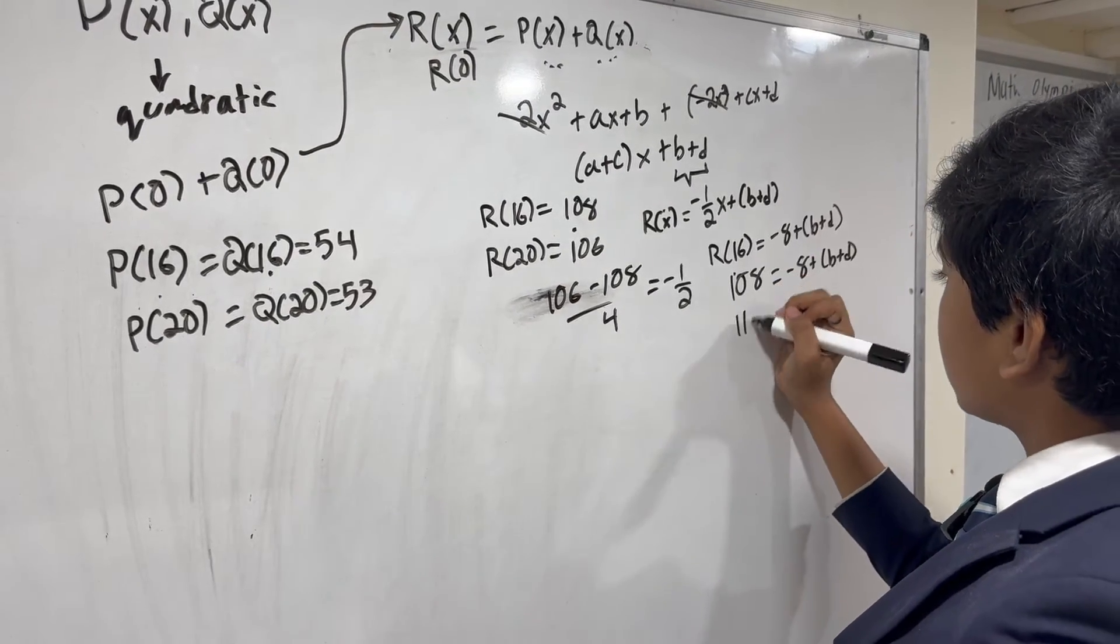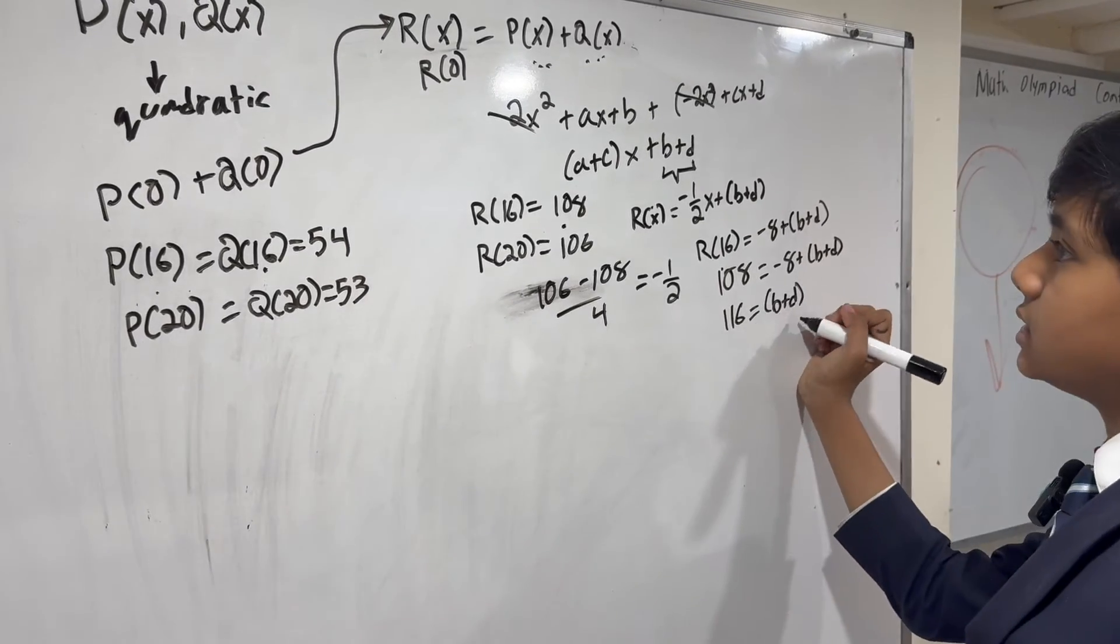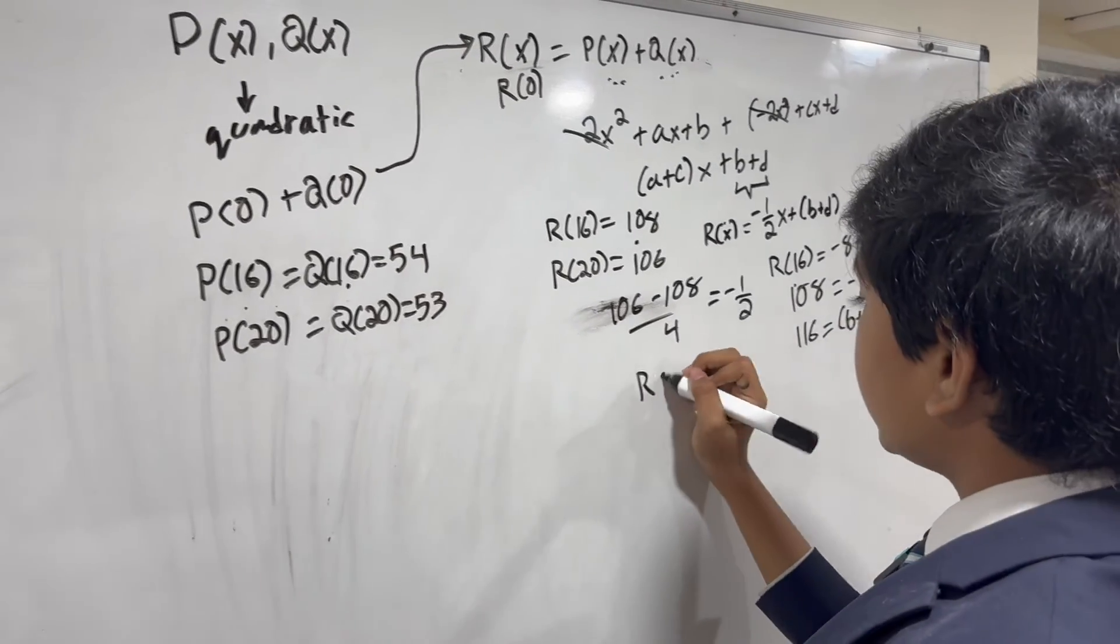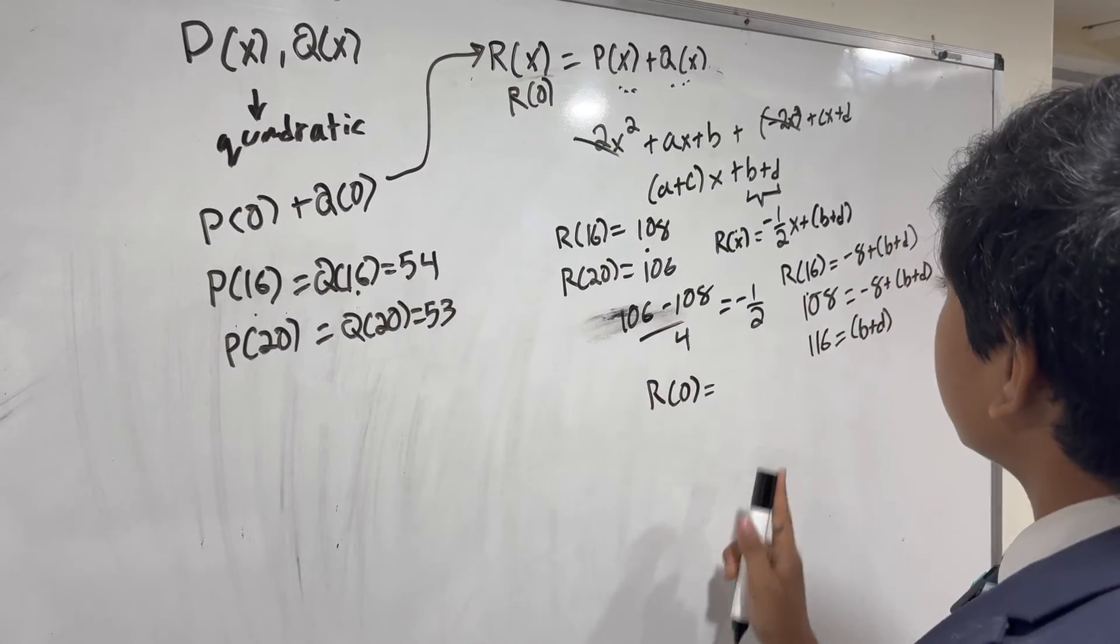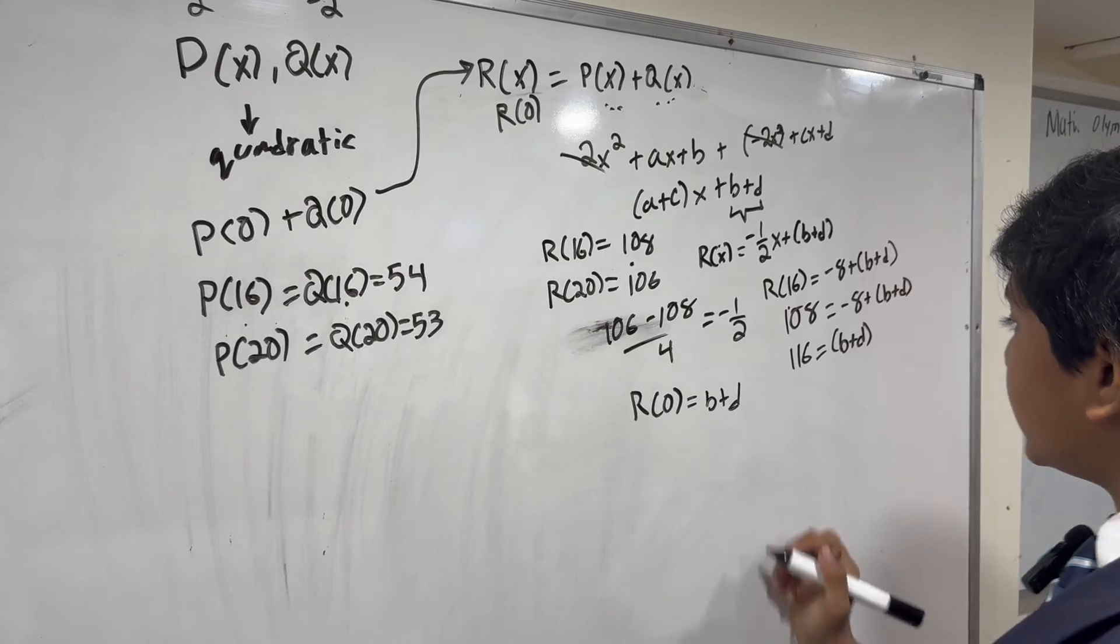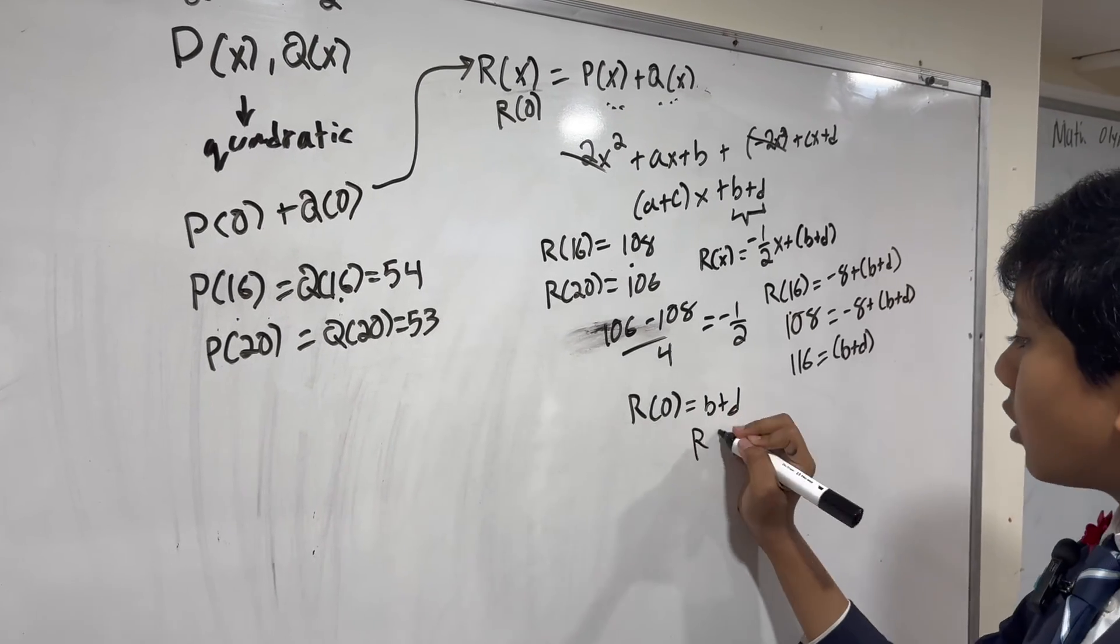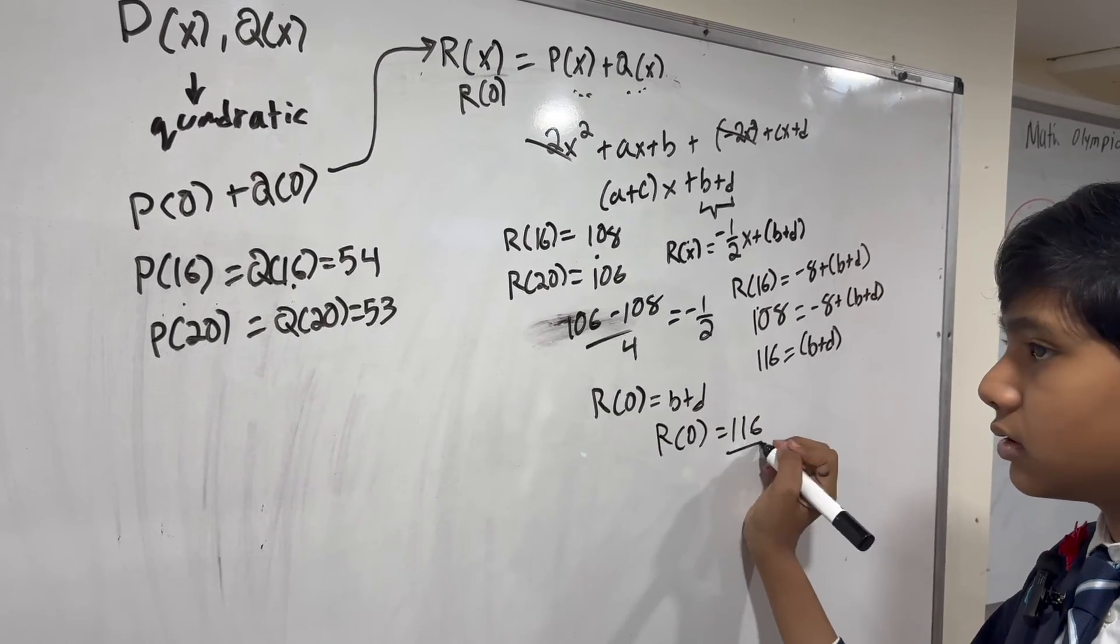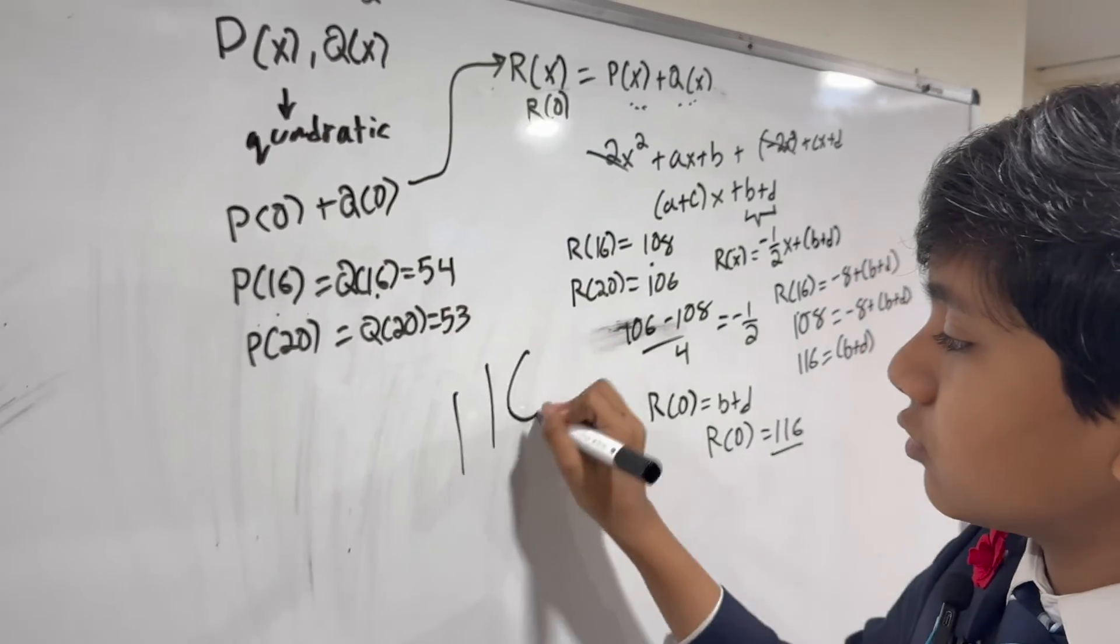So, that means we get 116 equals b plus d. And when we do R of 0, it's going to eliminate all the terms except the constant terms b and d. So, R of 0 is really just 116. So, that means the answer is 116.